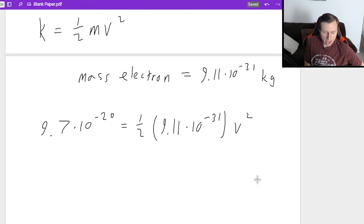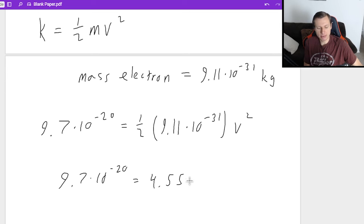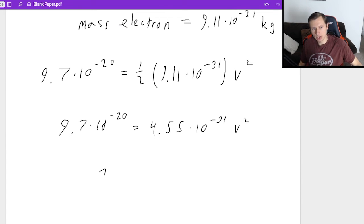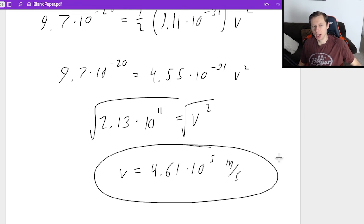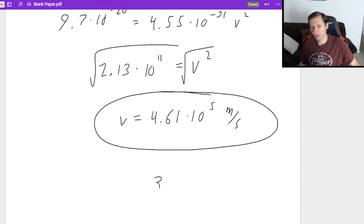So first I'll multiply the 1 half times 9.11 times 10 to the minus 31. So left side didn't change. The right side is now 4.55 times 10 to the minus 31 v squared. Then I'll divide both sides by that 4.55 number, and I'll get 2.13 times 10 to the 11th. That is v squared. And then we just take the square root of both sides, and our final velocity for this electron will be 4.61 times 10 to the fifth, and that's meters per second. And if you want to know how fast that is, remember, the speed limit of the universe, in other words, you cannot move faster than the speed of light, is 3 times 10 to the eighth. So we're pretty close to the speed of light. Not quite there, but we're pretty close. And so that's very exciting.